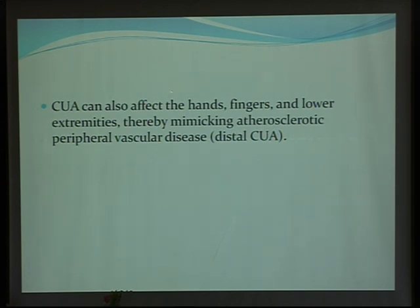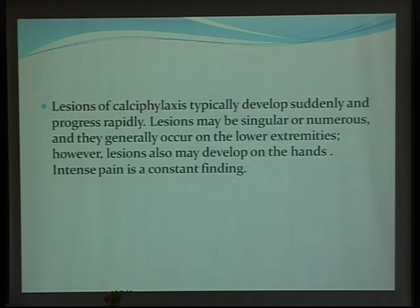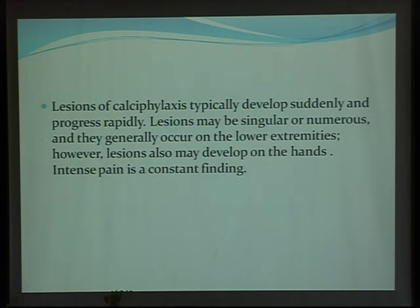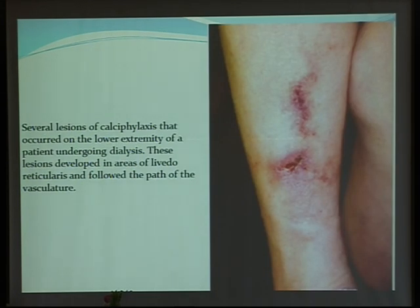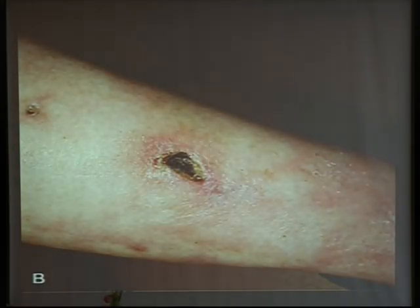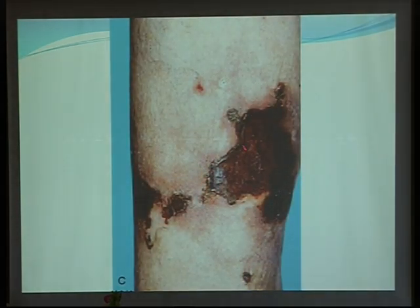Calciphylaxis can also affect the hands, fingers, and lower extremities — not only the trunk — so it may mimic sclerotic peripheral vascular disease, and we call it distal calciphylaxis. Lesions of calciphylaxis typically develop suddenly and progress rapidly. Lesions may be singular or numerous and generally occur on lower extremities, but may also develop on the hands with intense pain. You can see gangrenous skin and lesions along the distribution of a blood vessel.